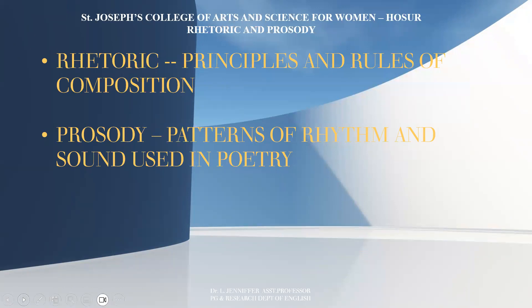The word rhetoric is derived from the Greek word 'rhetorike', meaning the art of oratory. The origin of rhetoric dates back to ancient Greece, especially to Aristotle, who wrote the treatise 'Rhetoric' in 320 BC. He elaborates his views on the art of writing in it. The object of writing is to communicate the writer's meaning in a clear and intelligible manner, and he elaborates his comments on composition in prose and style in general.